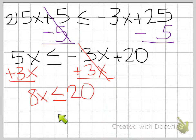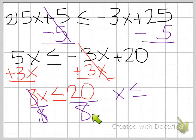Now we're not quite done yet. Our x is still not by itself. So now we need to divide by our 8. So divide by 8 on both sides. And 8 over 8 is just 1. So then we have x is less than or equal to 20 over 8.